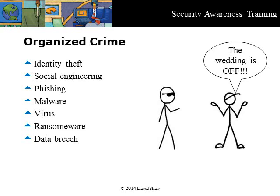A typical data breach from an attack by hackers will involve hundreds of thousands to tens of millions of users in a single event, putting debit and credit card numbers and customer contact information in the hands of organized crime. There are separate modules on the techniques used by organized crime, so for now we will move on to big data.